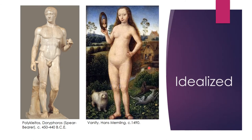Idealized figures are more of a cultural thing — they're figures that were considered ideal at that time. Here we have the spear bearer from ancient Greece, and from 1490, the 15th century, we have 'Vanity,' where this kind of potbelly was considered very beautiful at that time.